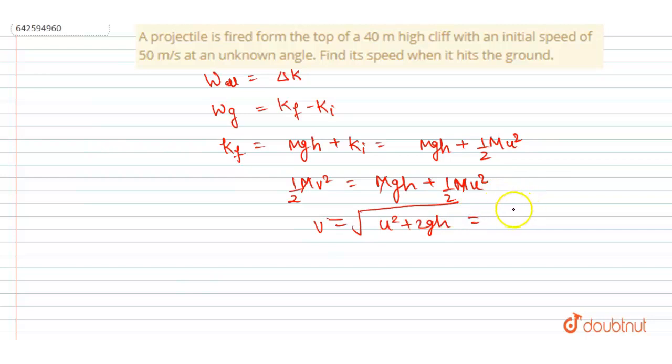So u squared is 2500, and the cliff height is 40, so 2 into 10 into 40 will be 800. So I put h equals